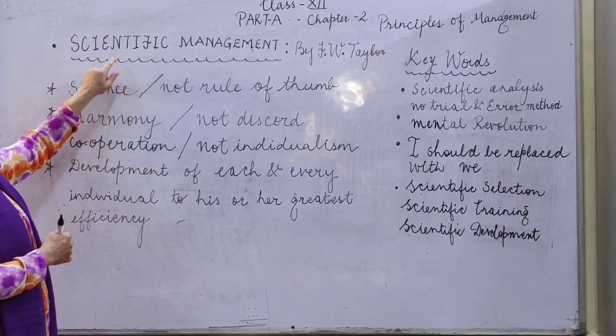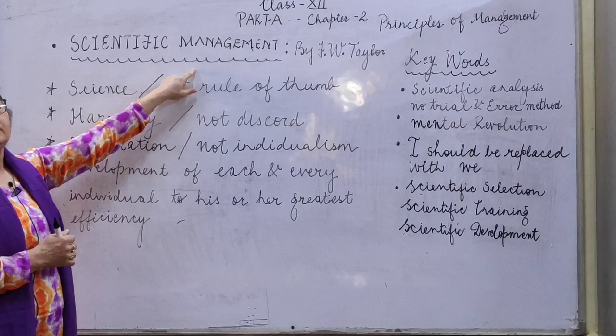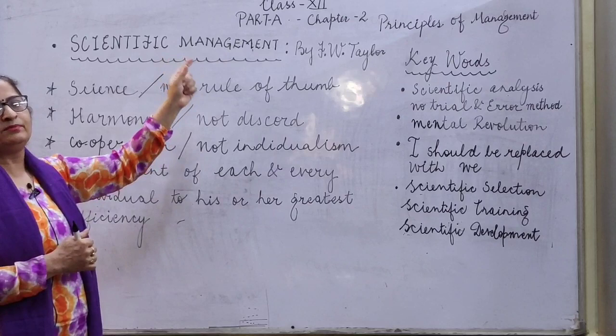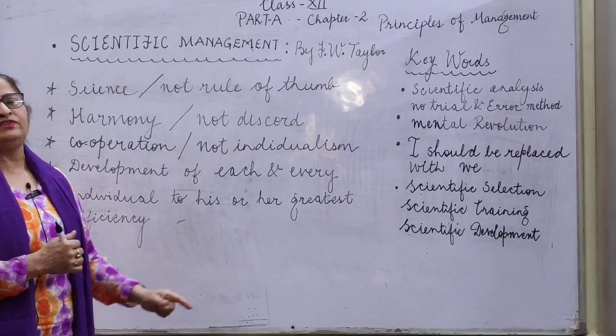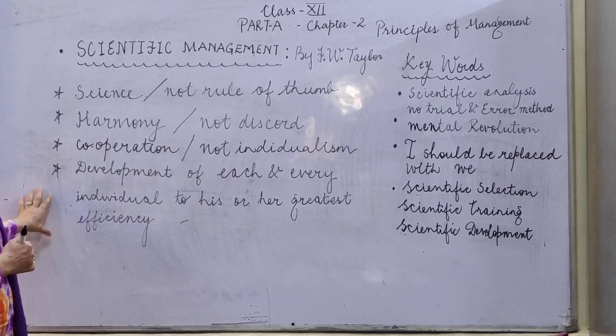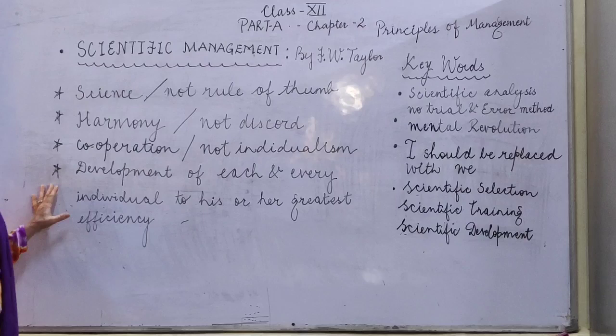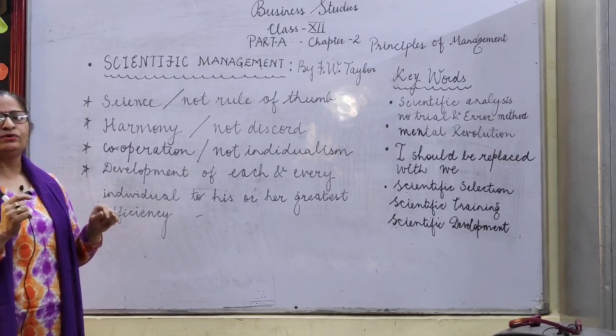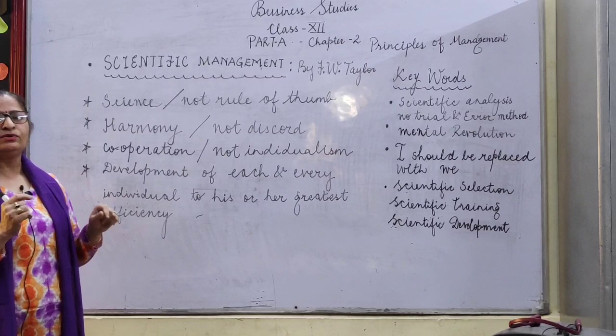For understanding the meaning of Scientific Management: science is involved in management for completing the task and for solving the problems of management, which includes employers as well as employees. Taylor was in favor of workers' efficiency being enhanced by introducing these principles. According to Taylor, Scientific Management means knowing exactly what you want men to do and seeing that they do it in the best and cheapest way.